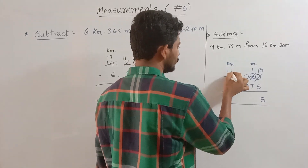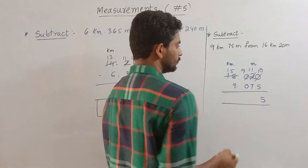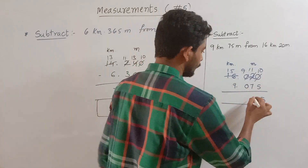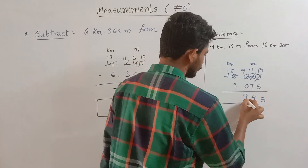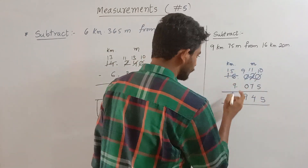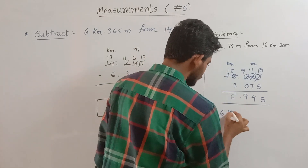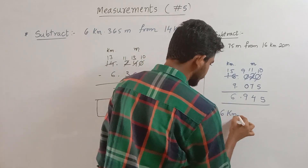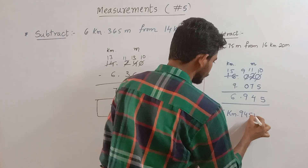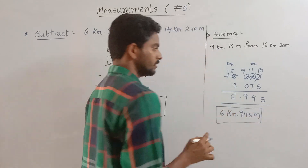This is 15. Now, we cut 10. This is 9. Level 7 minus 4 remains. This is 9. Number 9 minus 6. What is the answer? 6 km and 945 meters. That is the right answer.